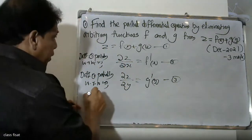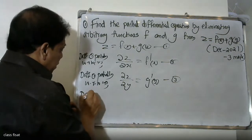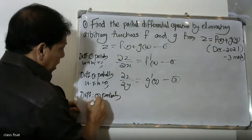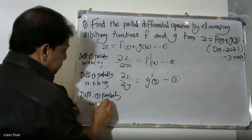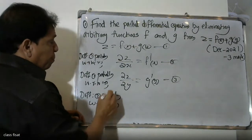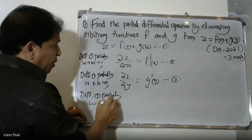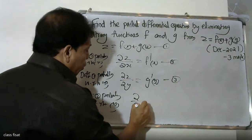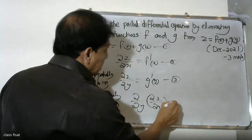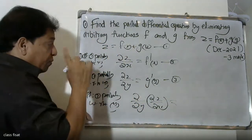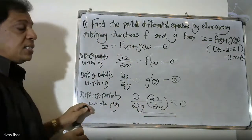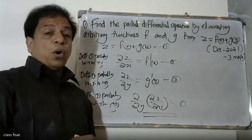Differentiating equation 2 partially with respect to y, we get ∂/∂y of ∂Z/∂x. The variable f-dash of x, when differentiated with respect to y, gives 0, since f-dash of x is a function of x only. Therefore ∂²Z/∂y∂x equals 0.